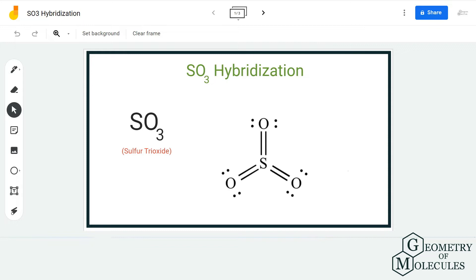Hi guys, welcome back to our channel. In today's video we are going to help you determine the hybridization of SO3 molecule. It's a chemical formula for sulfur trioxide, and to find out its hybridization we are going to find out the steric number of the central atom.